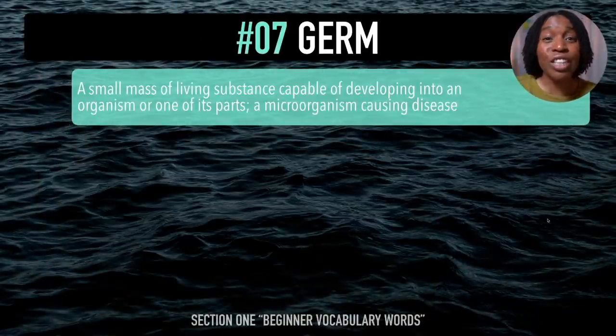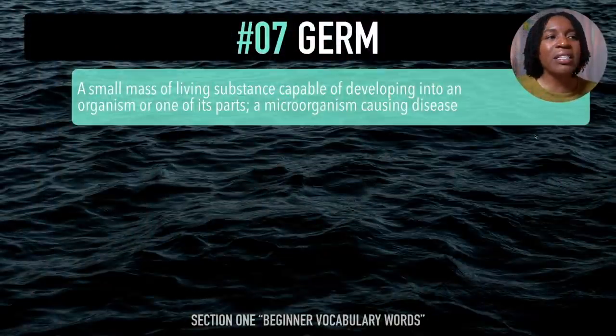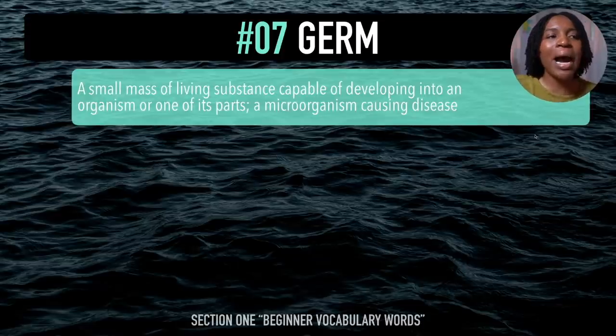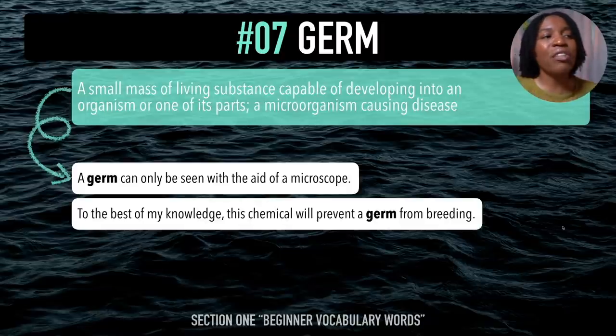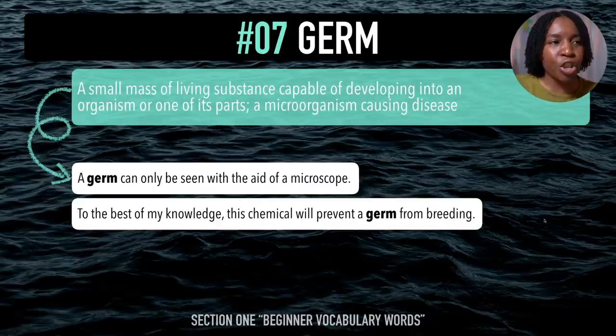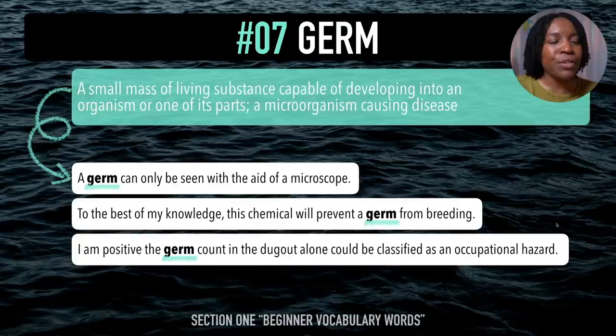The next beginner vocabulary word using the 'juh' sound is 'germ'. After me — germ. A germ is a small mass of living substance capable of developing into an organism, or a microorganism causing disease. Example sentences: A germ can only be seen with the aid of a microscope. This chemical will prevent a germ from breeding. The germ count in the dugout alone could be classified as an occupational hazard. Last time — germ.